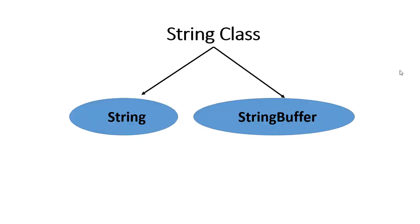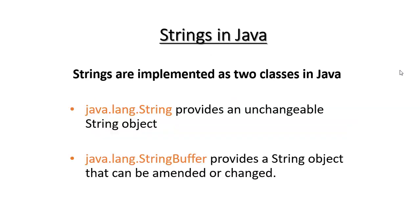Java's String class is categorized into two parts: String and StringBuffer. Strings are implemented as two classes in Java — java.lang.String and java.lang.StringBuffer. java.lang.String provides an unchangeable string object, while java.lang.StringBuffer provides a string object that can be changed.